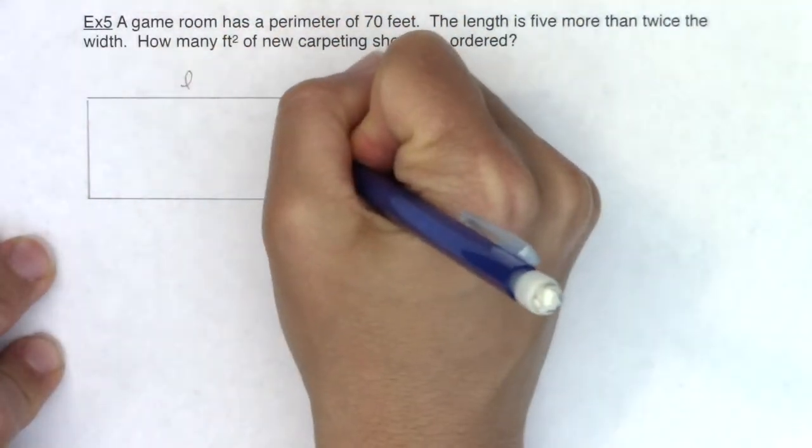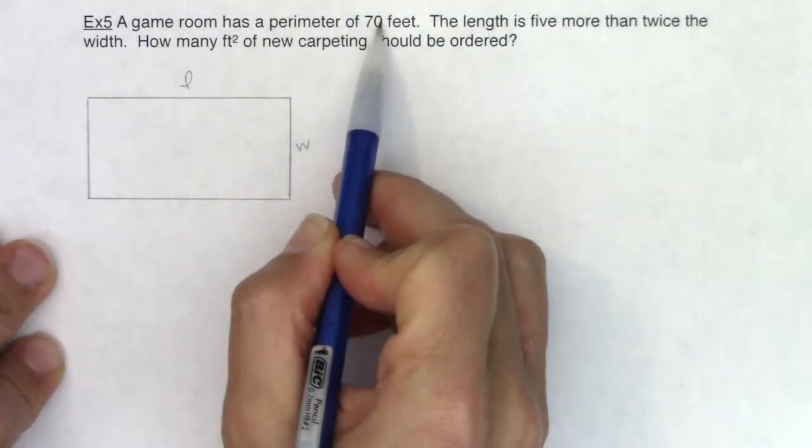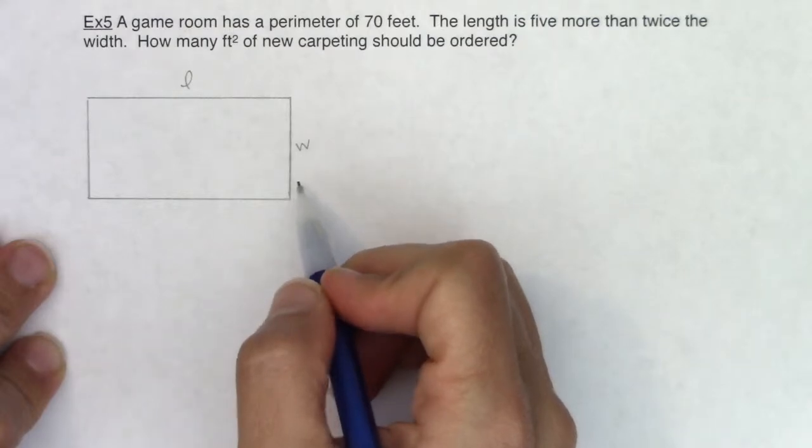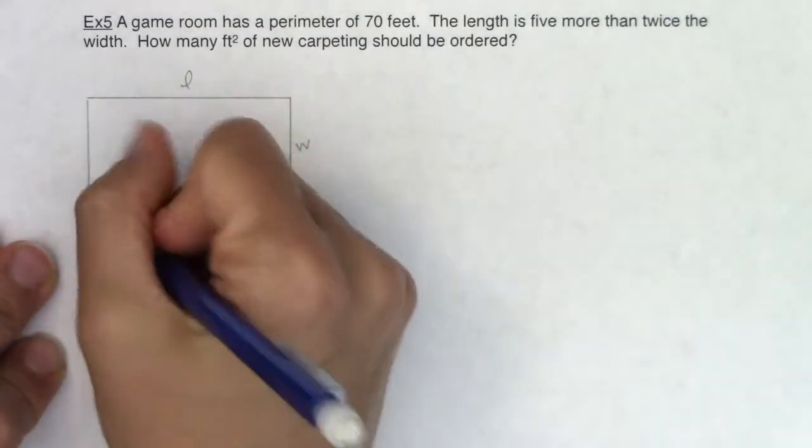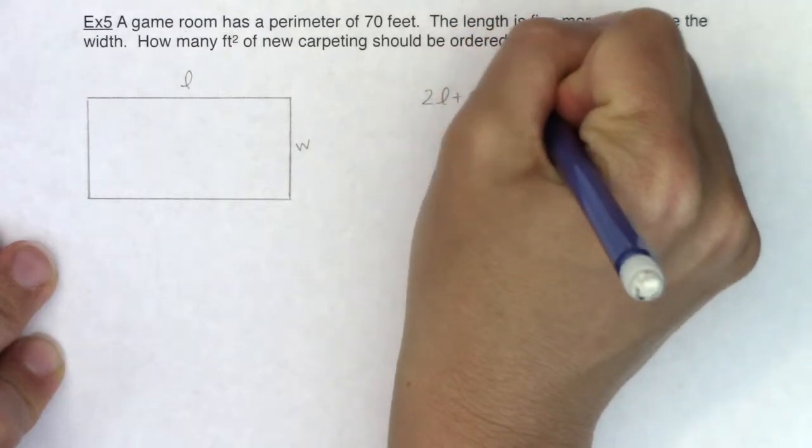Similar to the last problem I'm going to put L and W here. It says a game room has a perimeter of 70 feet. We talked about this in example four—when you use perimeter it's always 2L plus 2W equals 70.